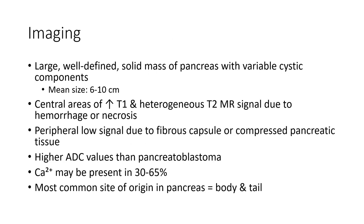On imaging, it appears as a large, well-defined solid mass of the pancreas with a fibrocystic component, with a mean size of 6-10 cm. There is a central area of increased T1 and heterogeneous T2 MR signal due to hemorrhage or necrosis. Peripheral low signal is due to a fibrous capsule or compressed pancreatic tissue, with higher ADC value than pancreatic blastoma. Calcification may be present in 30-65%, and the most common site of origin in the pancreas includes the body and tail.